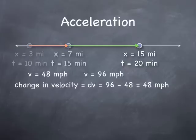The change in velocity, dv, or the difference in v, is 96 minus 48, which is 48 miles per hour. That means we accelerated 48 miles per hour since the first leg of the journey. This does not mean that our acceleration is 48 miles per hour. You cannot accelerate at 48 miles per hour. You need an extra unit of time.